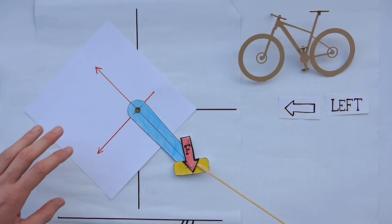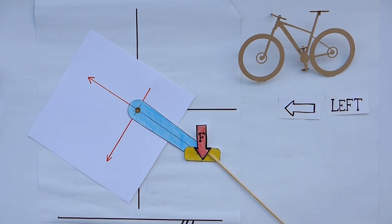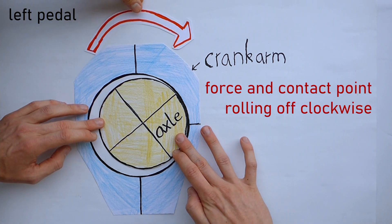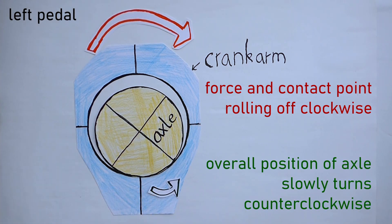On the left side, the pedaling force is turning clockwise relative to the crank arm. Therefore, it is inducing a counterclockwise movement on the axle. This shows that the left pedal needs a left-handed thread to not come loose.